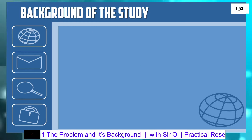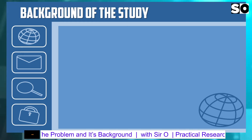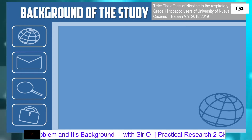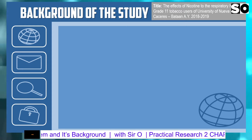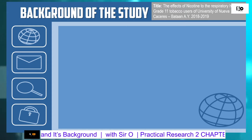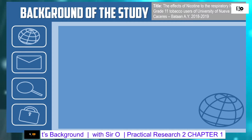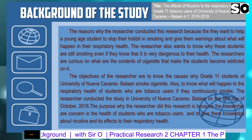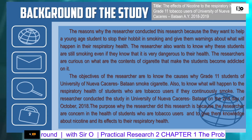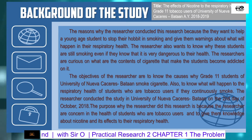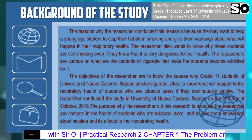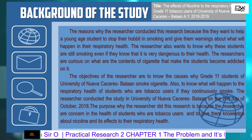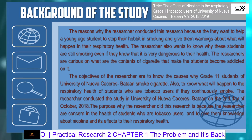An example of the background of the study uses the title 'The Effect of Nicotine to the Respiratory Health of Grade 11 Tobacco Users of University of Nueva Caceres, Bataan, Academic Year 2018-2019.' In the background of the study example, we can see that it gives us the setting of the problem as well as the objective and purpose of the problem, and it also answers the four W's and one H.